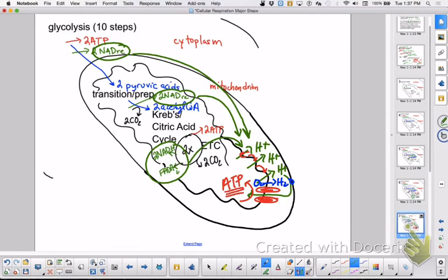Then you will take the reduced NADs and FADs to the top of your ETC. You will drop off those high energy electrons. As they work their way down the chain, a hydrogen ion gradient is generated. When those hydrogen ions move back through, that is how you will synthesize ATP.